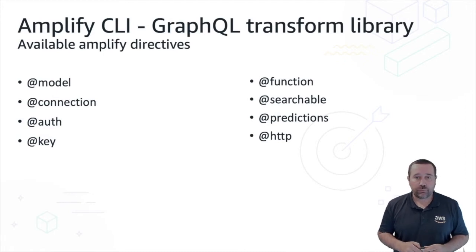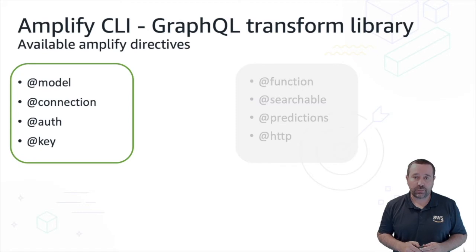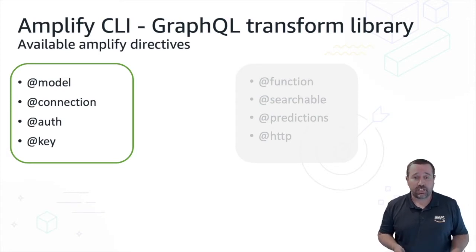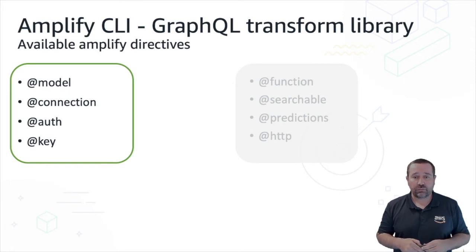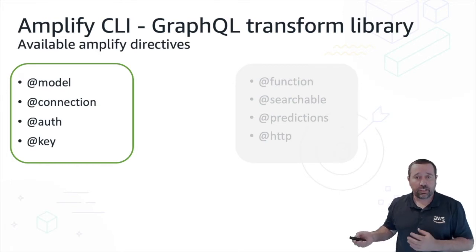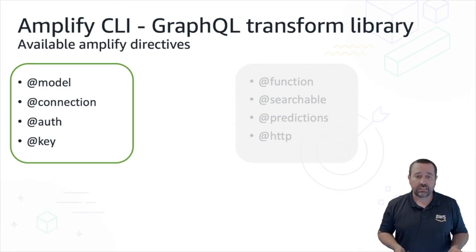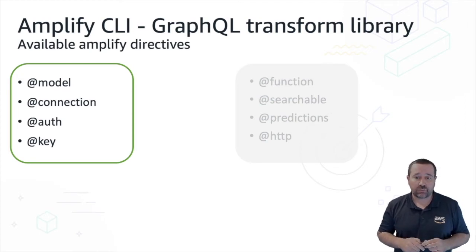So what are some of these GraphQL Transform directives? We're going to focus on a few of them today. The first is the model directive, which lets us define a data structure that maps to a DynamoDB table and creates the data source in AppSync. We also have the connection directive, which allows us to create relationships between different models. The auth directive lets us overlay authorization rules on our data, mapping to how an authentication service like Cognito controls access. Lastly, we have the key directive, which allows us to create a custom index structure mapping to a global secondary index in DynamoDB for efficient and performant queries.